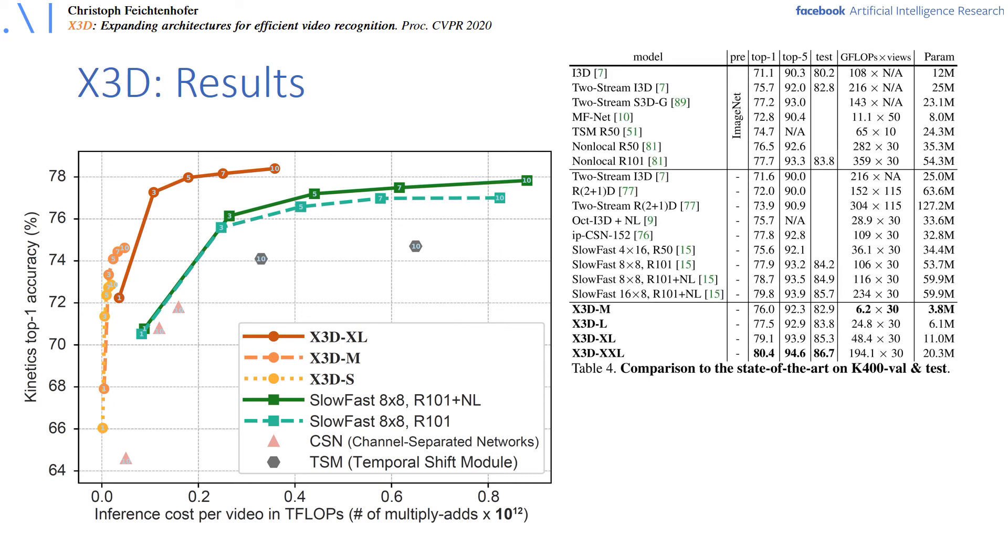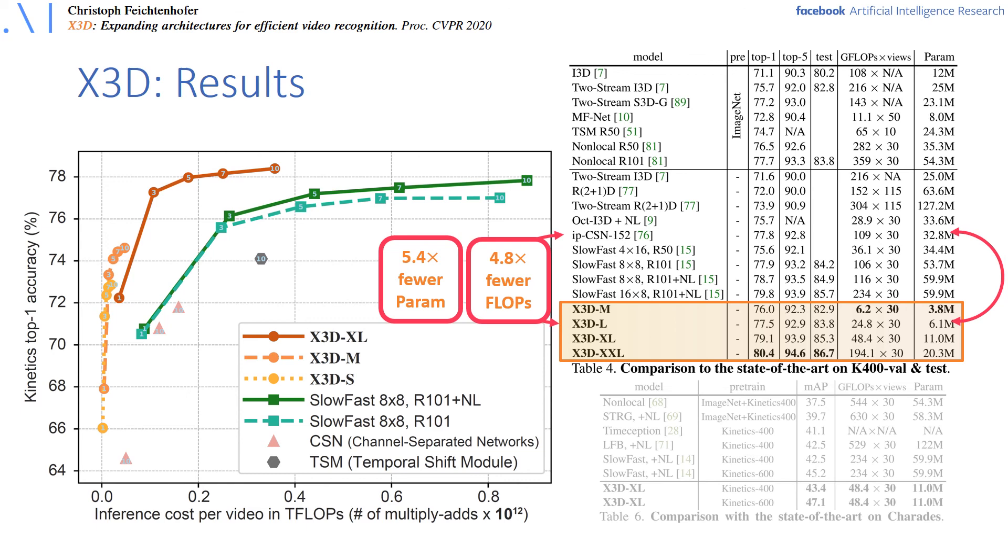Concretely, when comparing to state-of-the-art channel-separated networks and slow-fast numbers on the Kinetics dataset, X3D can provide a 5x reduction in FLOPs and parameters at the same accuracy. The paper has further experiments for Charades long-term activity recognition and also for the AVA action detection task, where the same observations hold.